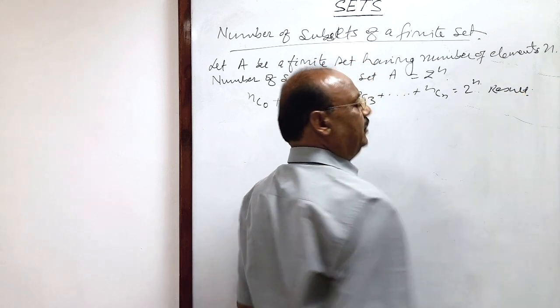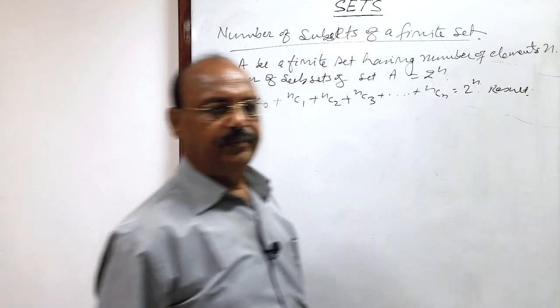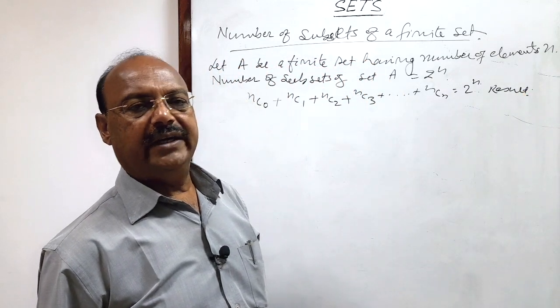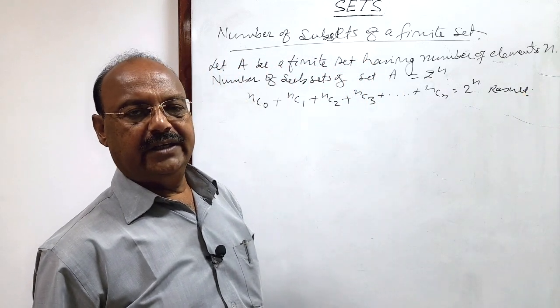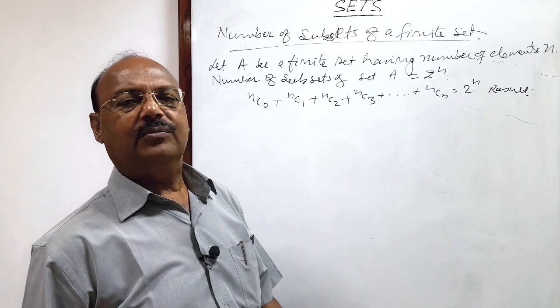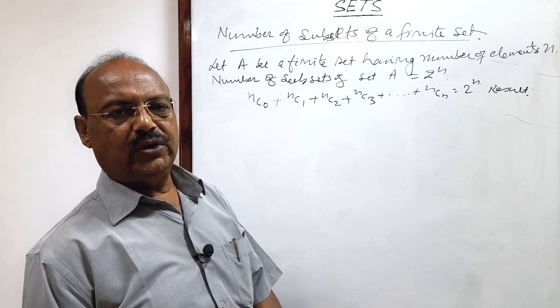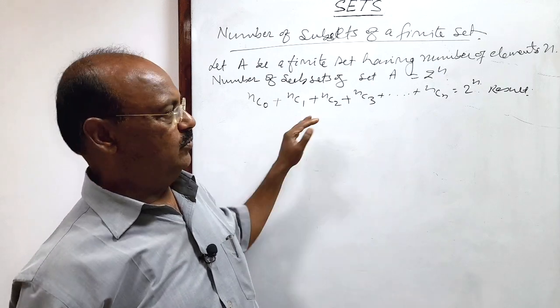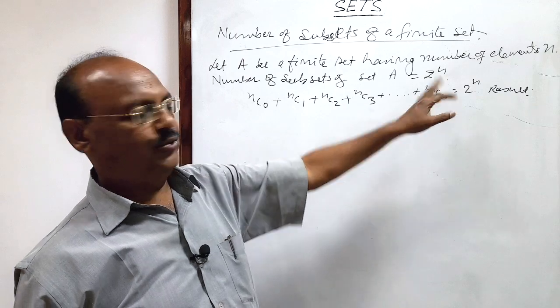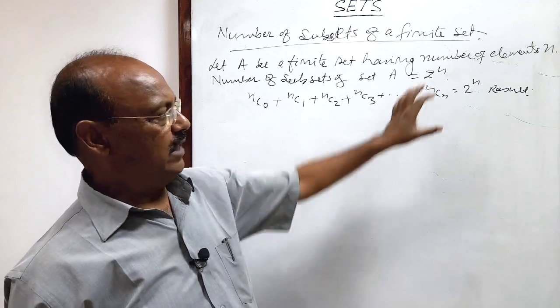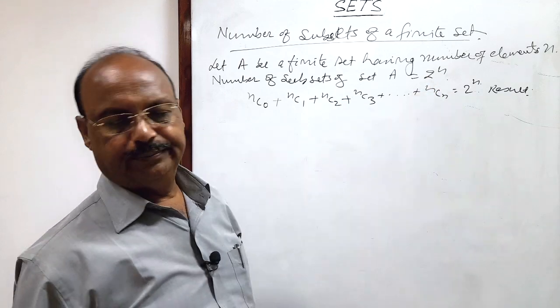So, now we understand that if any set A is having n number of elements, then the total number of subsets of this set will be 2 to the power n — and that we have to remember.